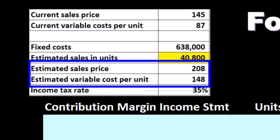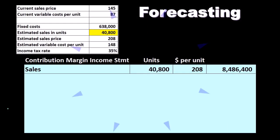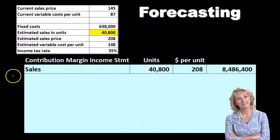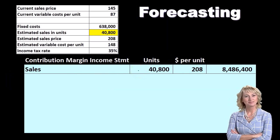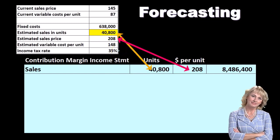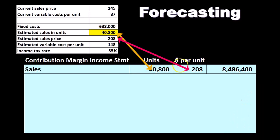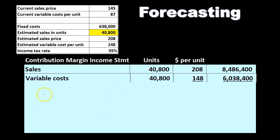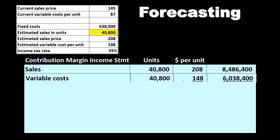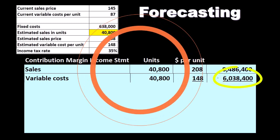If we consider our contribution margin income statement format for forecasting, we have sales in units — 40,800 projected units — sold for $208 per unit. So 40,800 times $208 gives us $8,486,400. Next, we have the variable costs. We take the same 40,800 units and multiply by the variable cost per unit, which we know from our CVP analysis — $148 per unit. 40,800 times $148 gives us $6,038,400.